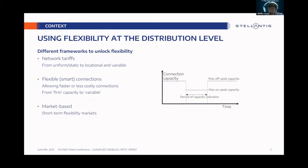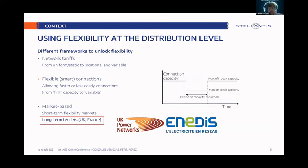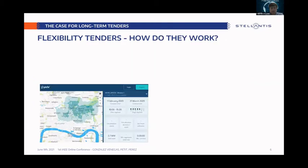What has been attracting a lot of research interest lately is market-based solutions. A lot of research has been done on short-term flexibility markets or local flexibility markets that couple in a day-ahead or intraday fashion to solve congestions in the distribution grid. However, what's really interesting and much less researched are long-term flexibility tenders. They have already been implemented in the UK since 2018 and recently in France as well, and they have been an interesting mechanism to unlock flexibility.